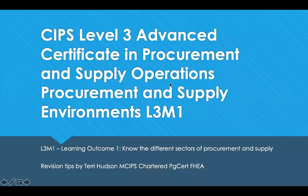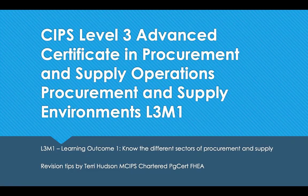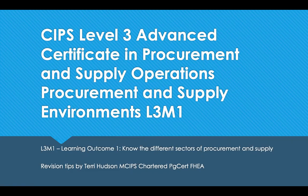Hello and welcome to revision tips for CIPS Level 3, the Advanced Certificate in Procurement and Supply Operations. This is Module 1, Procurement and Supply Environments, and its Learning Outcome 1, which is to know the different sectors of procurement and supply.